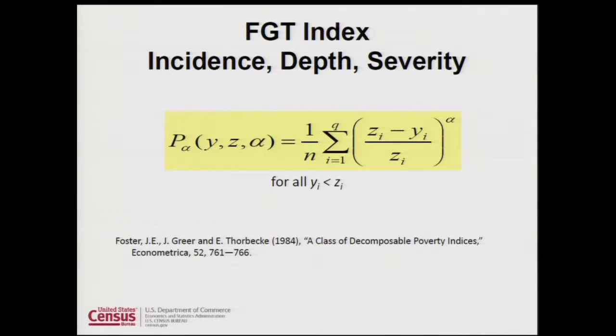A lot of people use the Foster-Greer-Thorbecke (FGT) indexes to measure poverty. In the expression, Y is incomes, Z is the poverty line, and alpha is a parameter that changes what we're measuring. If alpha is zero, this is essentially a poverty rate — we're counting the number of people whose incomes are below the poverty line and dividing by N, the total population.